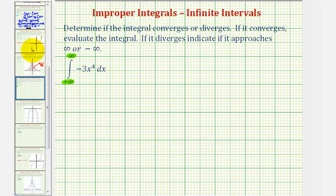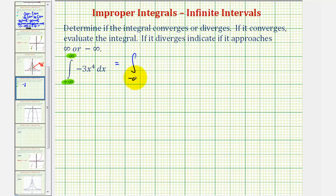Going back to our example, let's use the constant zero to break this up into two separate integrals. We'll write this as the integral from negative infinity to zero, plus the integral from zero to positive infinity.